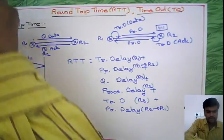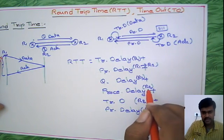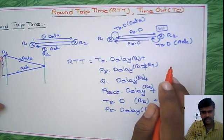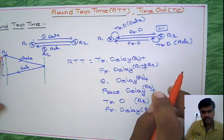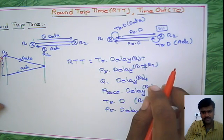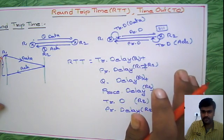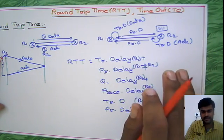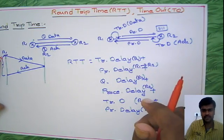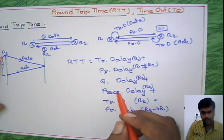All of these together form the round trip time. However, we make some assumptions and set certain delays to zero, because in real time some delays are comparatively very small. For example, if you have 10,000 rupees and 10 more rupees, you would say 10,000 — you do not consider the 10 rupees because it is very small. Similarly, we go for approximation in round trip time.